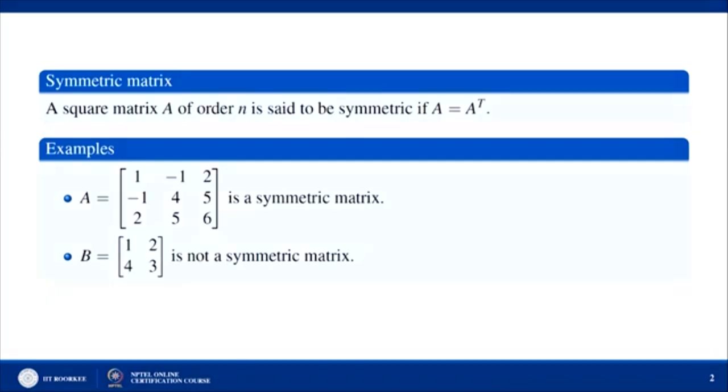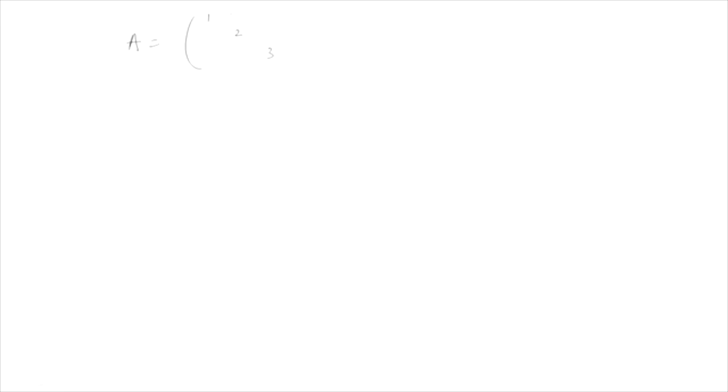We can always construct a symmetric matrix like this: suppose you have matrix A, you can arbitrarily put any diagonal elements — if it is 4 here, 4 here, 5 here, 5 here, say 7 here, minus 7 here, minus 7. If you find its transpose, it is always 1, 4, 5; interchanging rows and columns gives 4, 2, minus 7; 5, minus 7, 3. You can easily see that A transpose equals A, so A is a symmetric matrix.